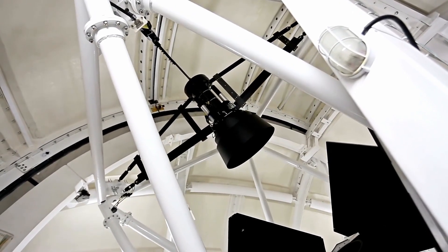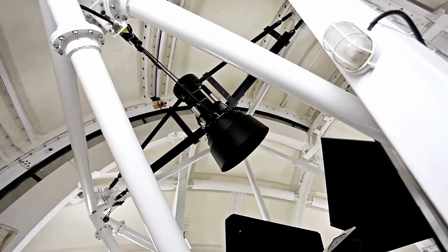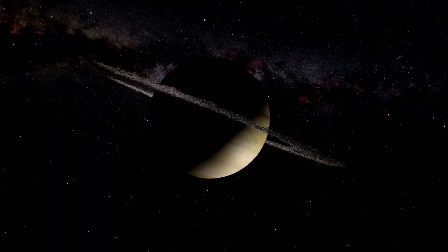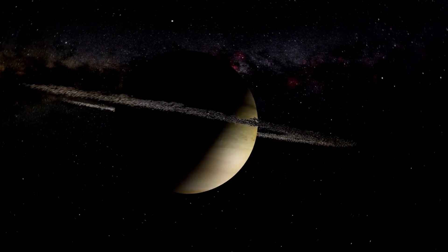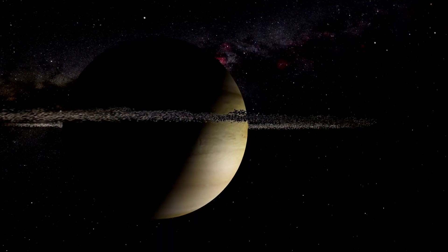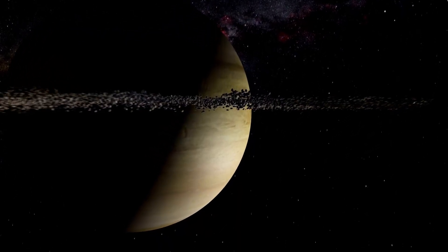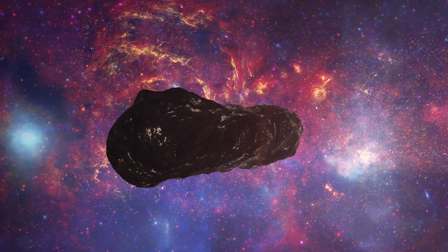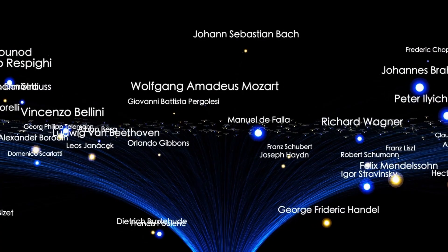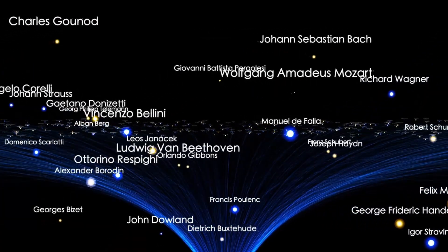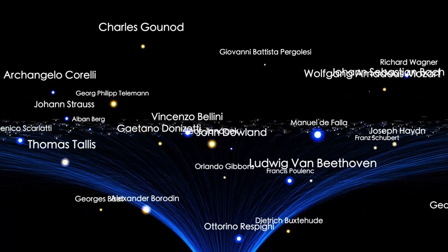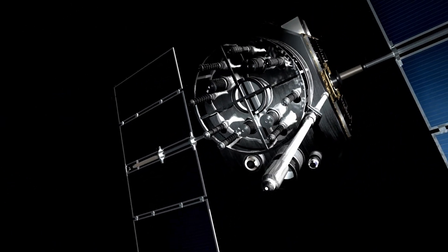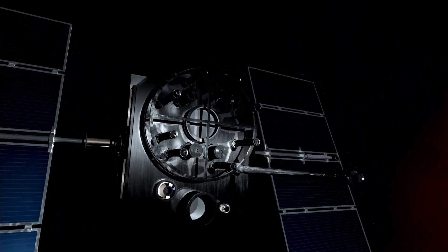This level of control is unheard of in natural bodies. It's as if 3i Atlas is using its own outgassing as microthrusters, adjusting its approach like a spacecraft would. Even more disturbing, those thrusts are perfectly aligned with the planet's orbital plane. Scientists aren't just tracking an object anymore. They're watching it aim, and the window for impact keeps narrowing. Between September 19th and 30th, any single outburst could be the one that pushes it over the edge.